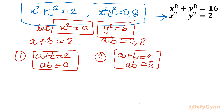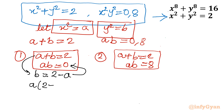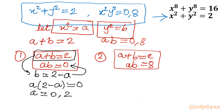For System 1 (a + b = 2, ab = 0): from ab = 0, substituting b = 2 − a gives a(2 − a) = 0, so a = 0 or a = 2. When a = 0, b = 2; when a = 2, b = 0.